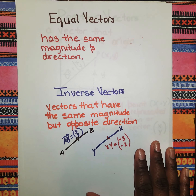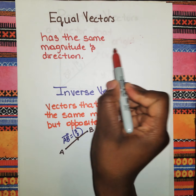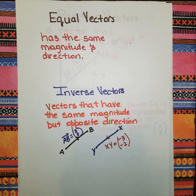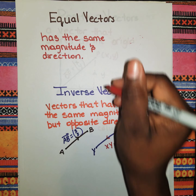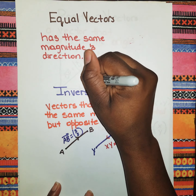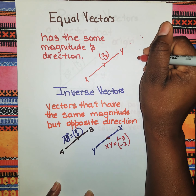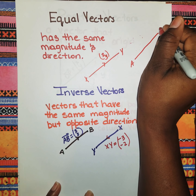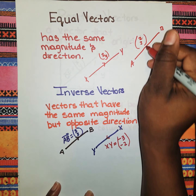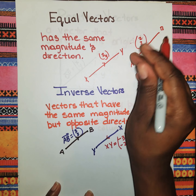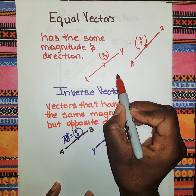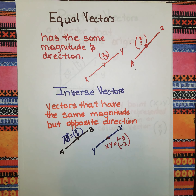We have something called equal vectors. These vectors have the same magnitude and direction. For example, vector XY with values (2, 3) and vector AB also with values (2, 3) — they may not be beside each other, but once the x-values and y-values are the same, they are considered to be equal vectors.